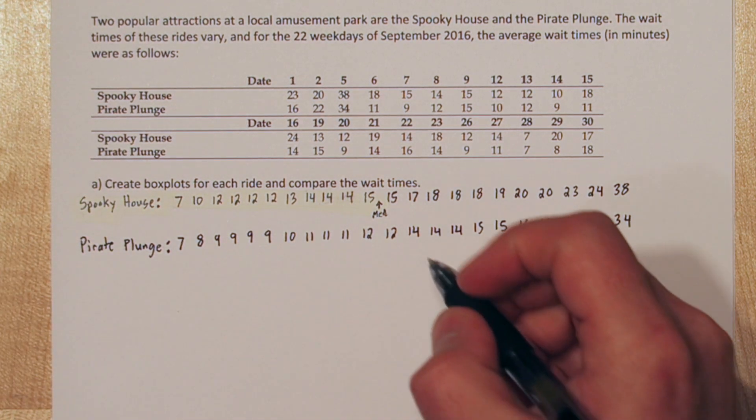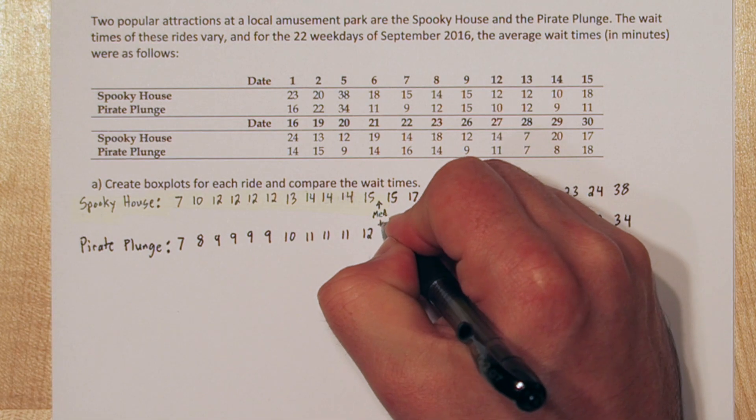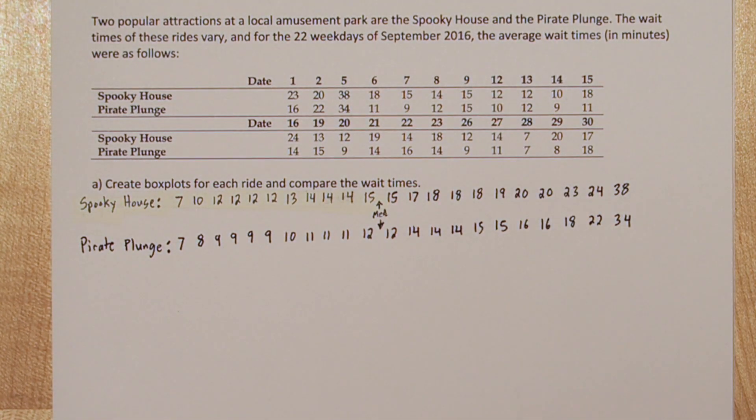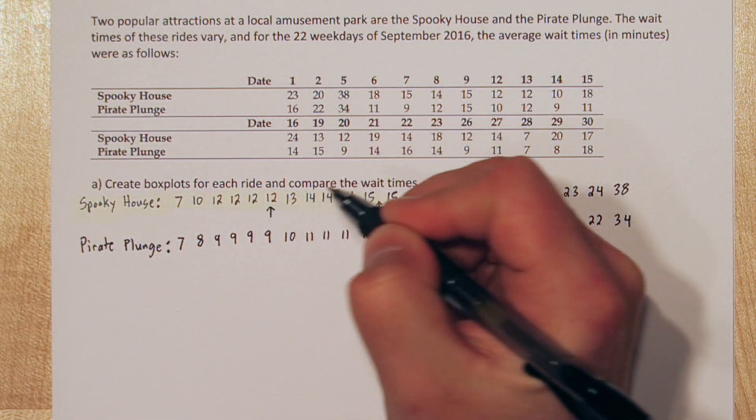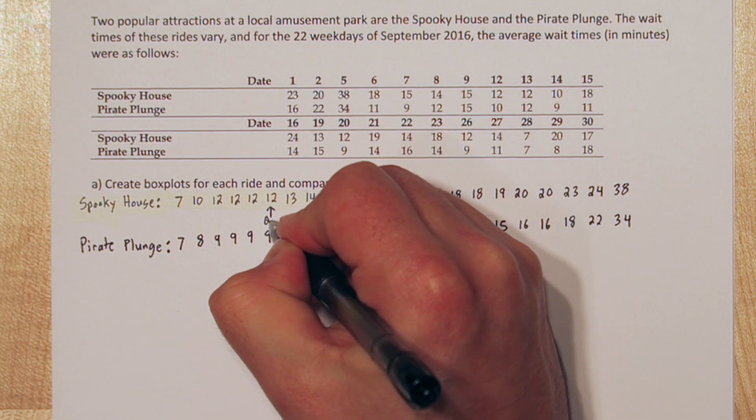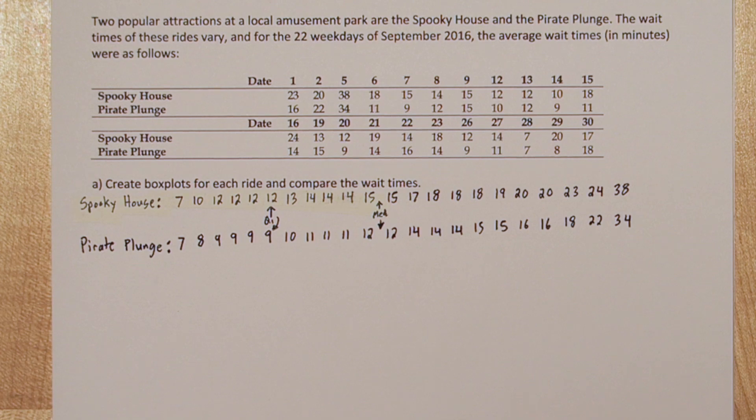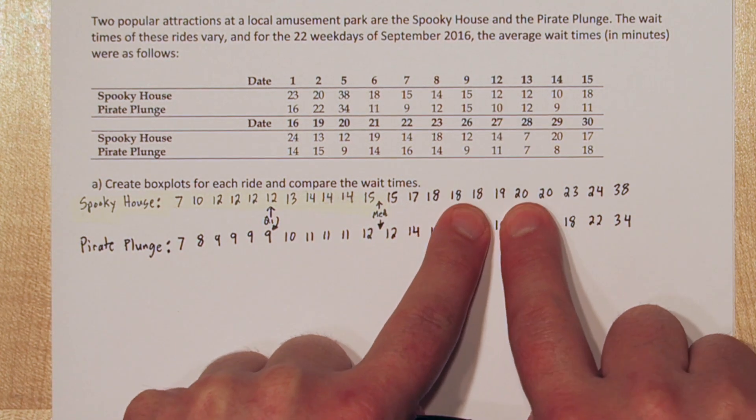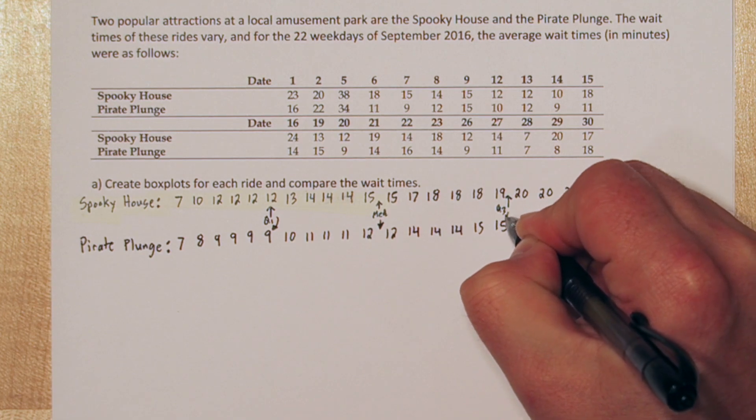Since we lined our data up with Pirate Plunge, we can see that the median of Pirate Plunge is 12. Now we need to find quartile 1. To do that, we're going to find the median of the lower half of the data. It's this 12. And for Pirate Plunge, it's the 9. Now let's find quartile 3 the same way. Quartile 3 is the 19 and the 15.